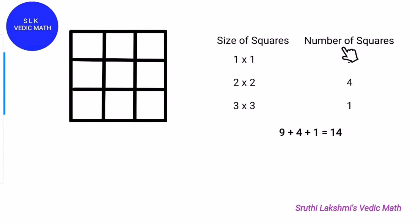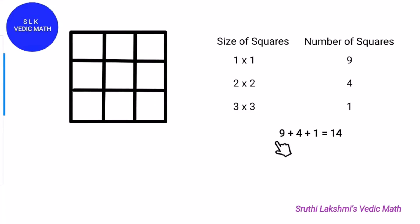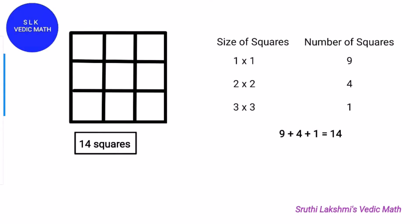Now add these numbers: 9 plus 4 plus 1. So 9 plus 4 is 13, and 13 plus 1 is 14. So there are 14 squares in this 3 by 3 grid.